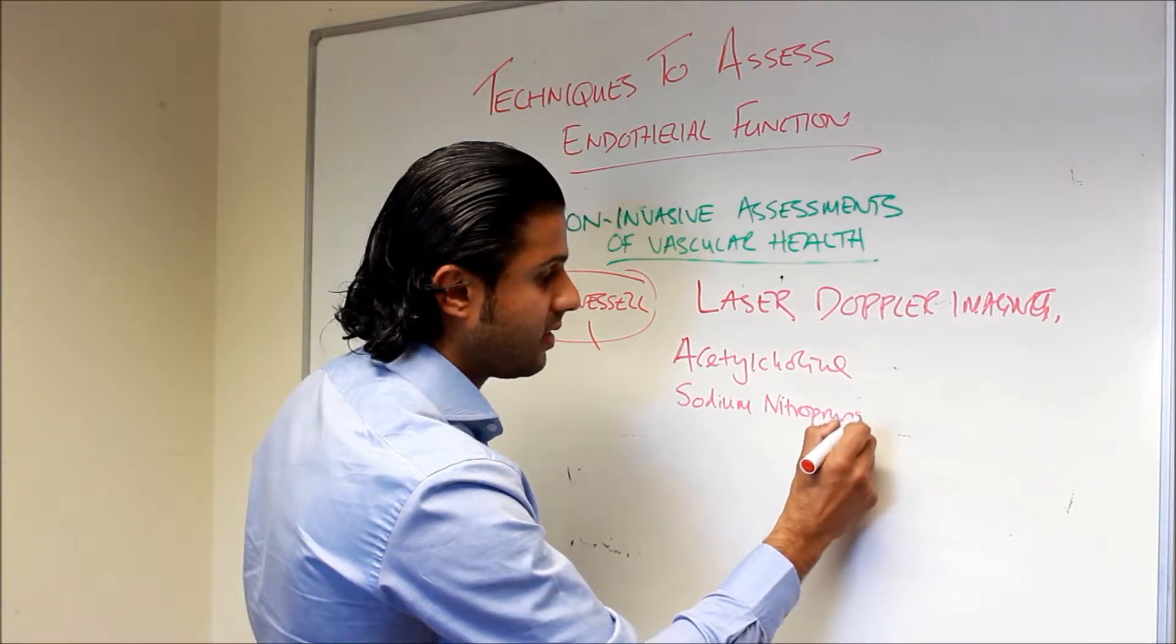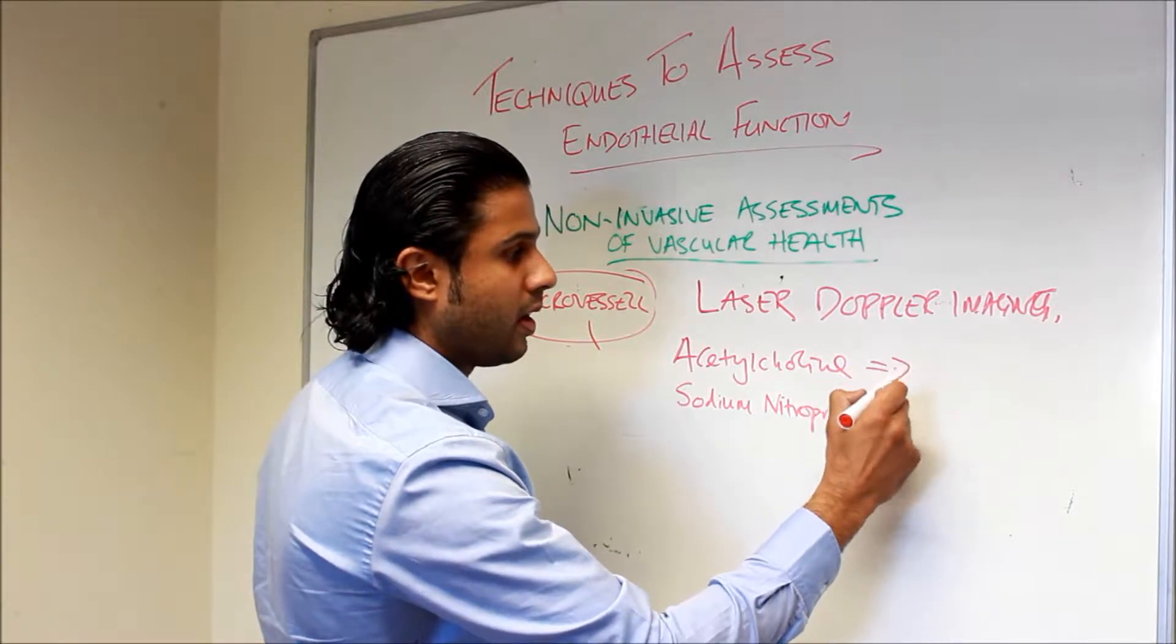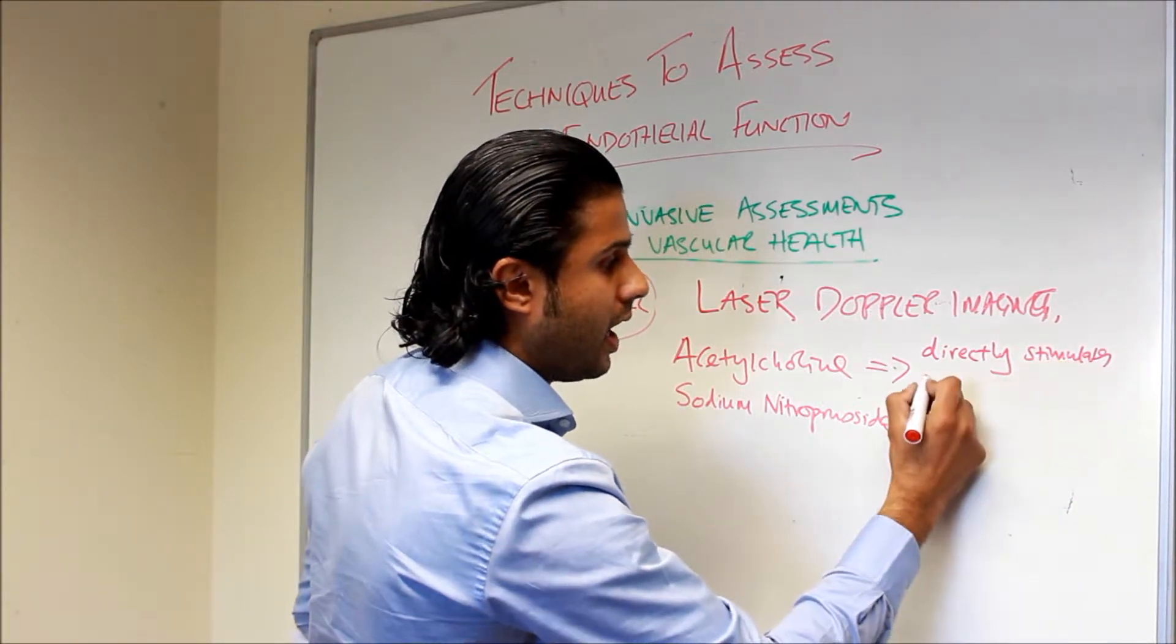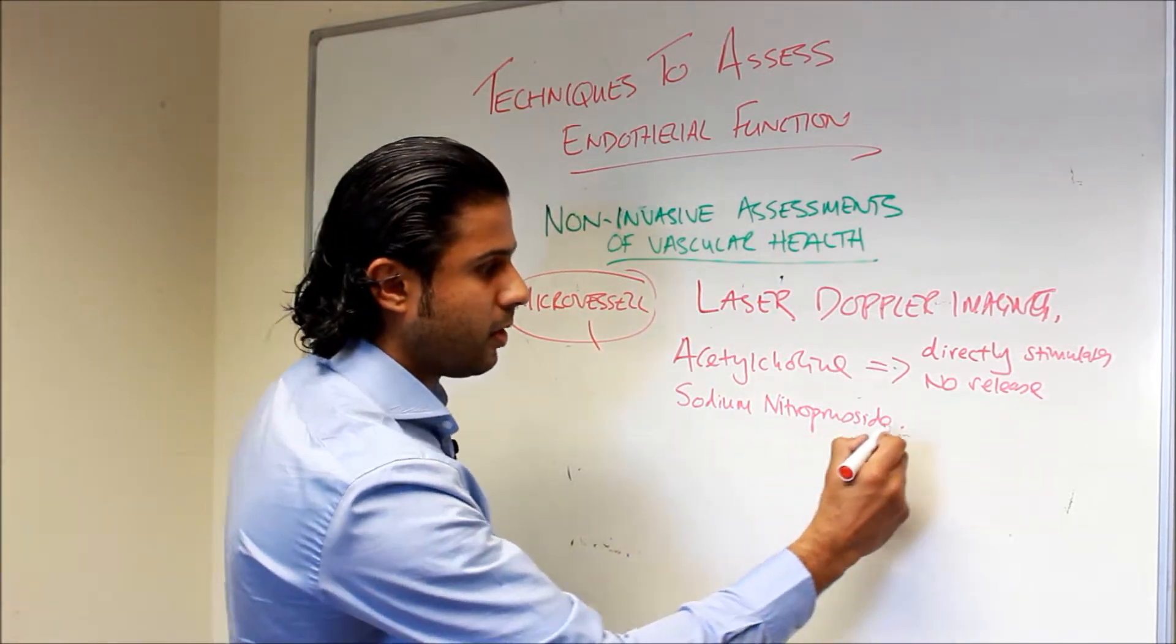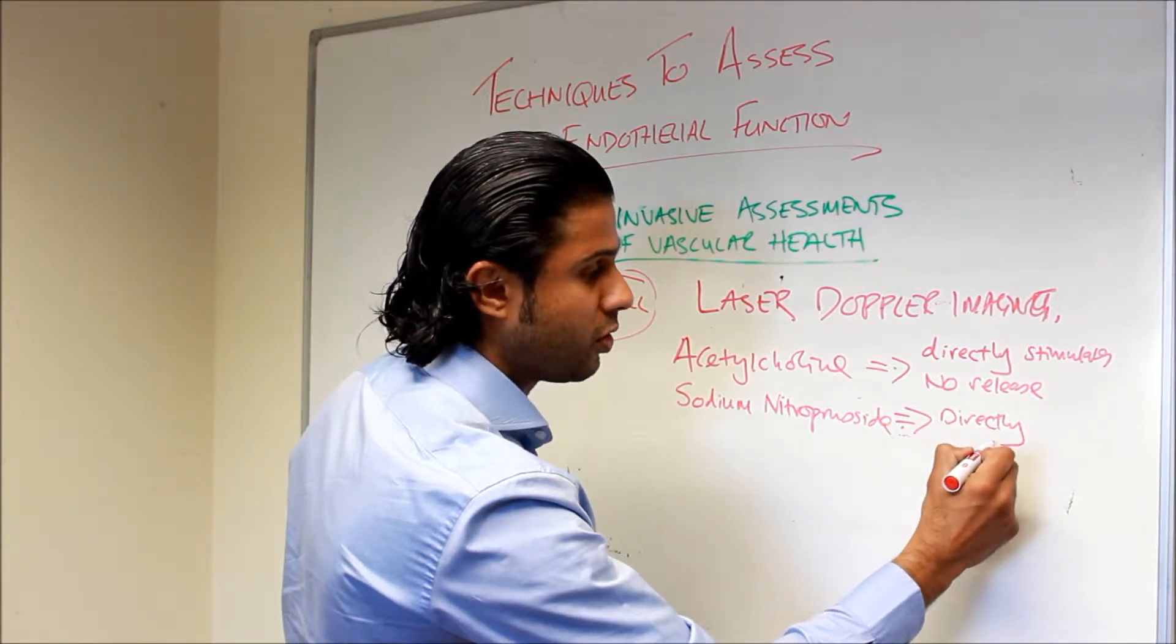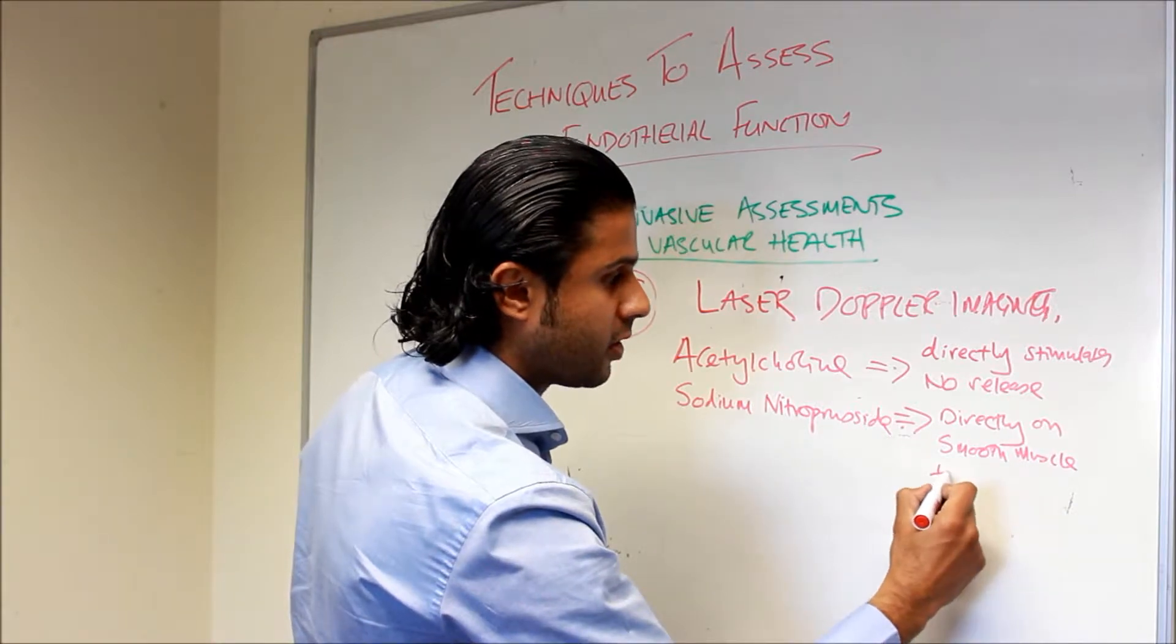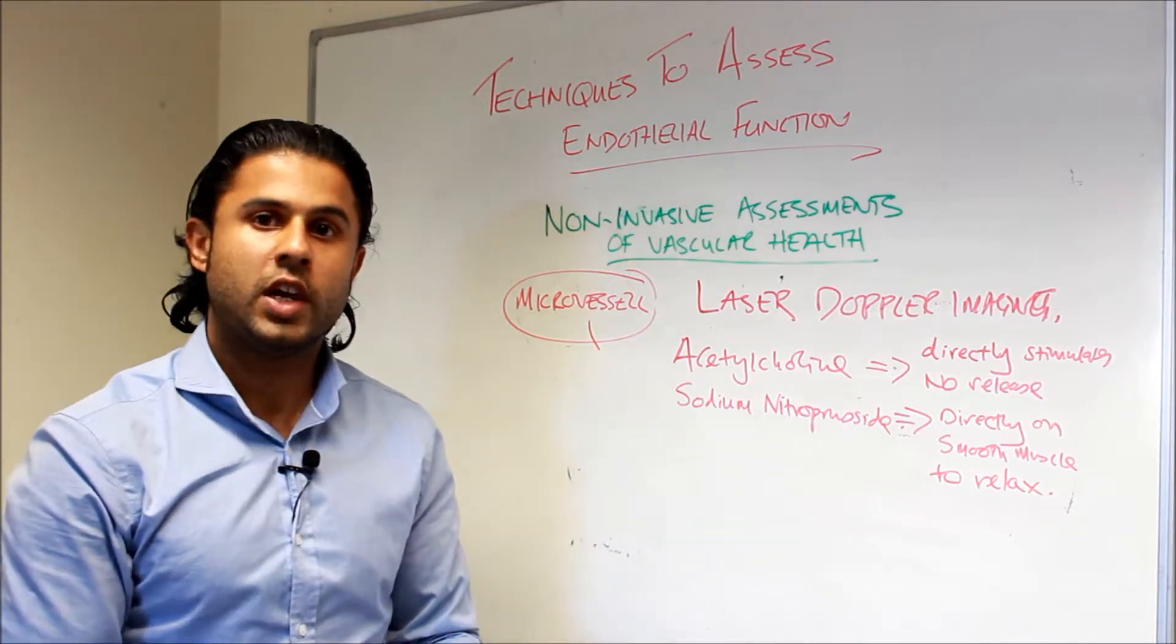Sodium nitric oxide and acetylcholine are both vasoactive agents. Acetylcholine directly stimulates NO release by acting upon muscarinic receptors on the endothelium, and the sodium nitric oxide works directly on the smooth muscle—it binds to smooth muscle receptors and causes the smooth muscle to relax.